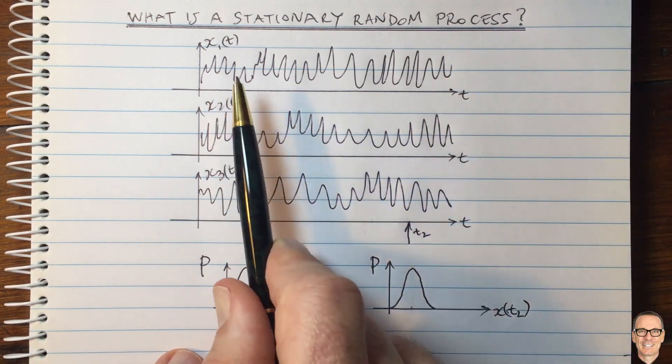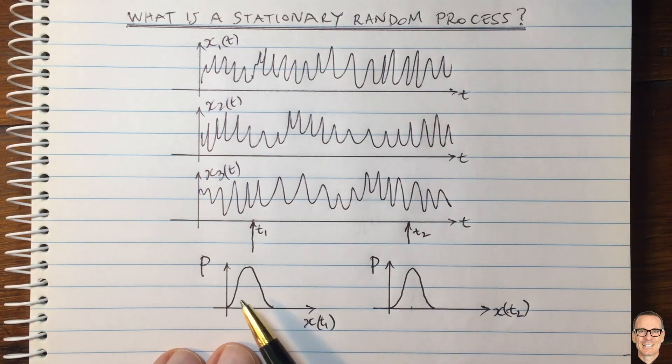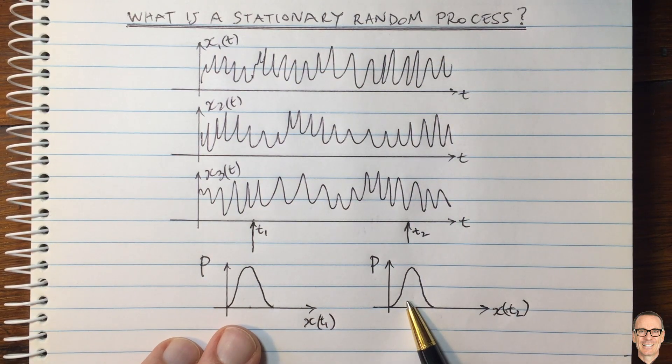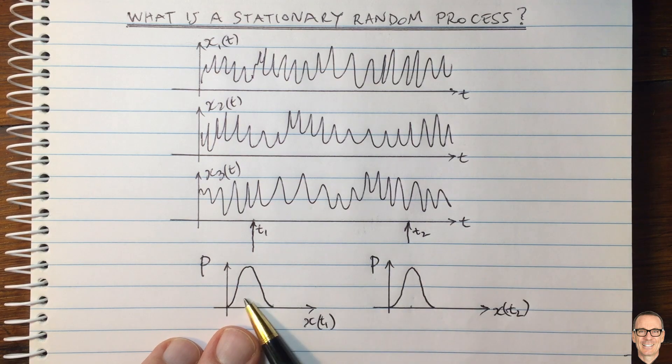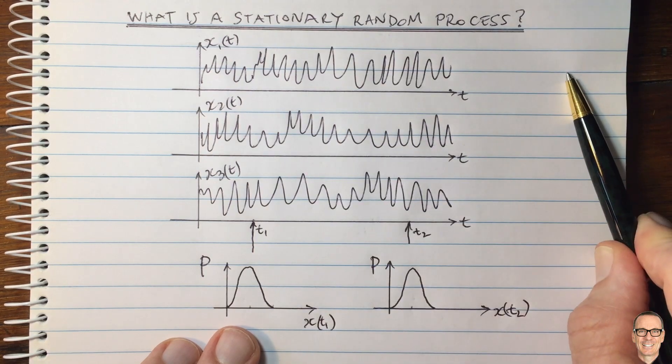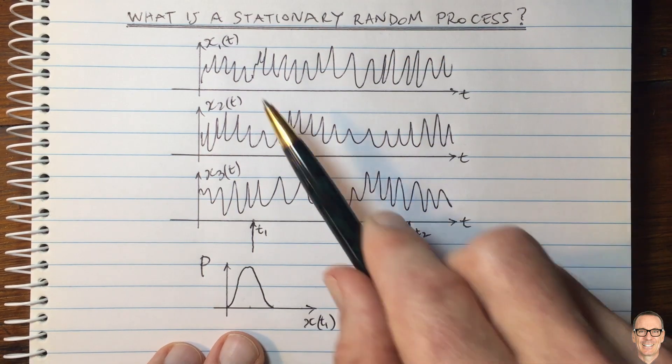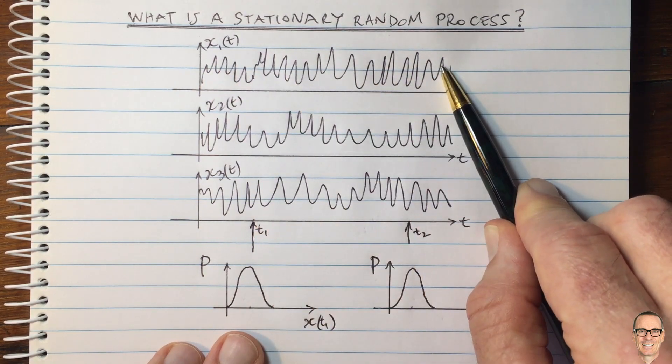And in that case, when you go to the time and you're looking at the different times, then the PDFs will not be the same. It certainly won't be the same at night as it is during the peak hours. So over that longer period of time, it would not be a stationary random process. But over a shorter period of time, it is stationary.